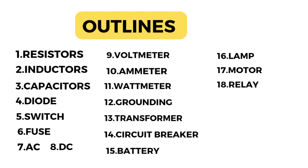Here are the outlines of this video: resistor, inductor, capacitor, diode, switch, fuse, alternating current, direct current, ammeter, voltmeter, wattmeter, grounding, transformer, circuit breaker, battery, electric lamp, electric motor, and relay. So let's start one by one.